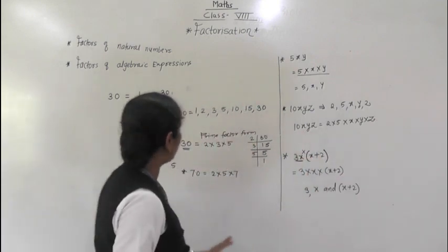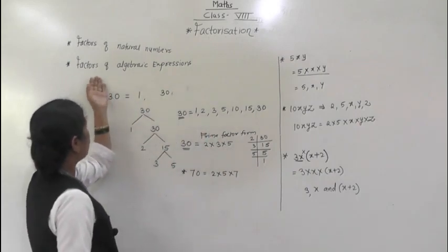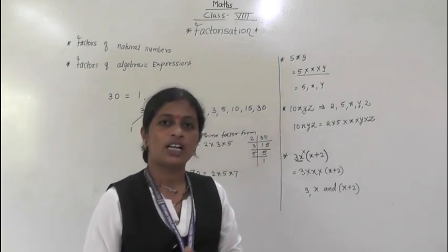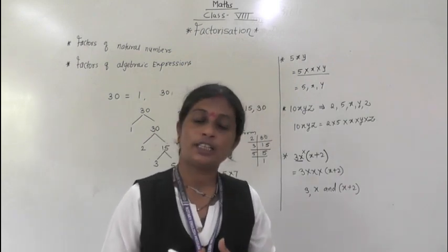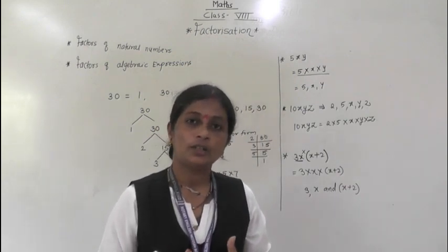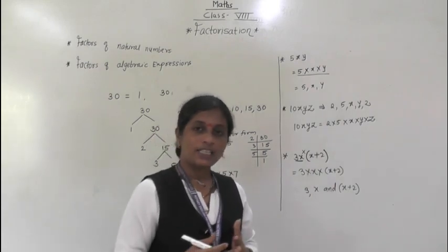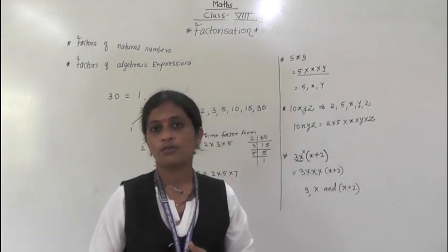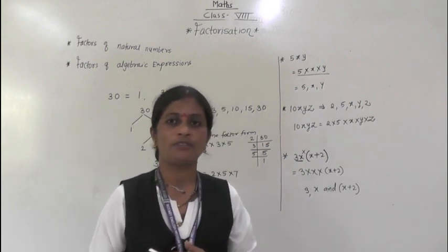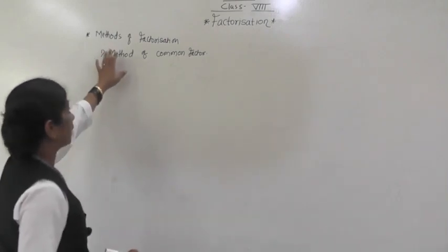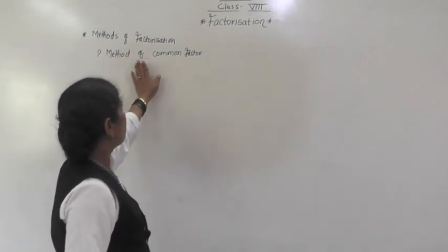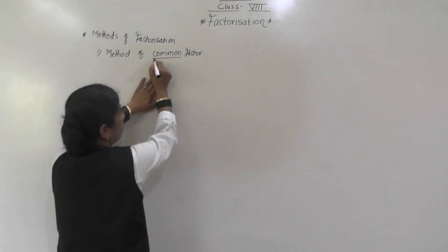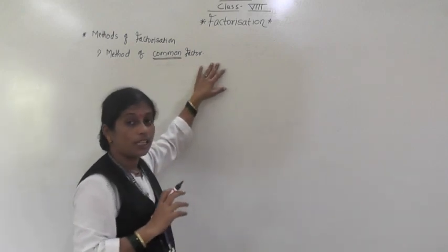So we have revised what are the factors of natural numbers and what are the factors of algebraic expressions. Now we will see what factorization actually is. There are many methods of factorization: first, the method of common factor; second, making groups — factorization by grouping method; then factorization by splitting the middle term. Now we will see these methods of factorization.